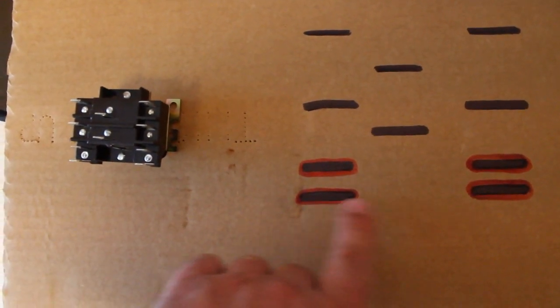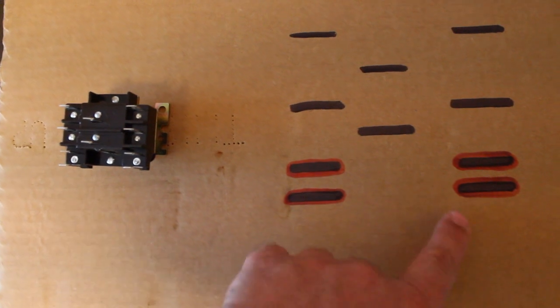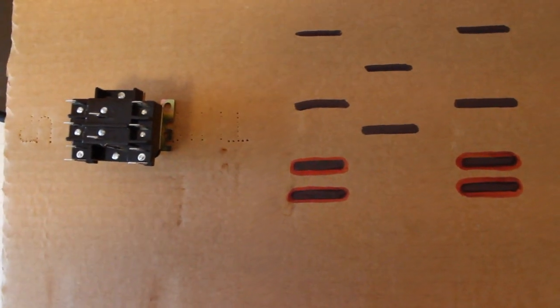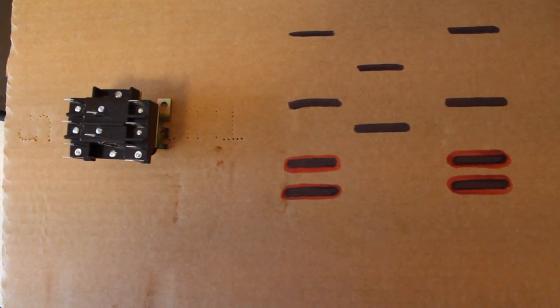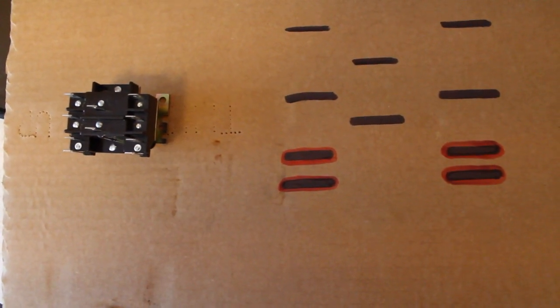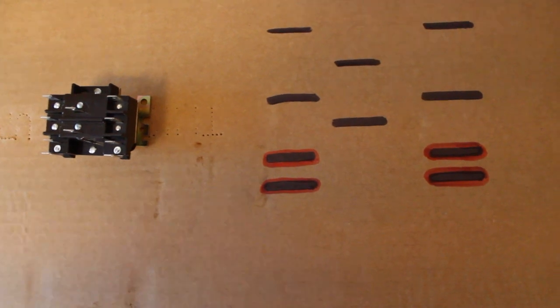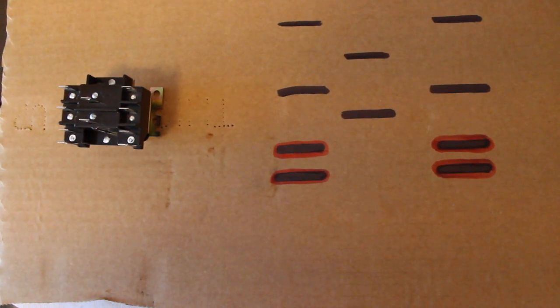On one side, you would have your common, either one, and on the opposite side you'd have your hot, 24 volts on this particular relay. Of course, some coil voltages are 120 or 240, but for most of mine, it's 24 volts. So that is your coil voltage there in the red.